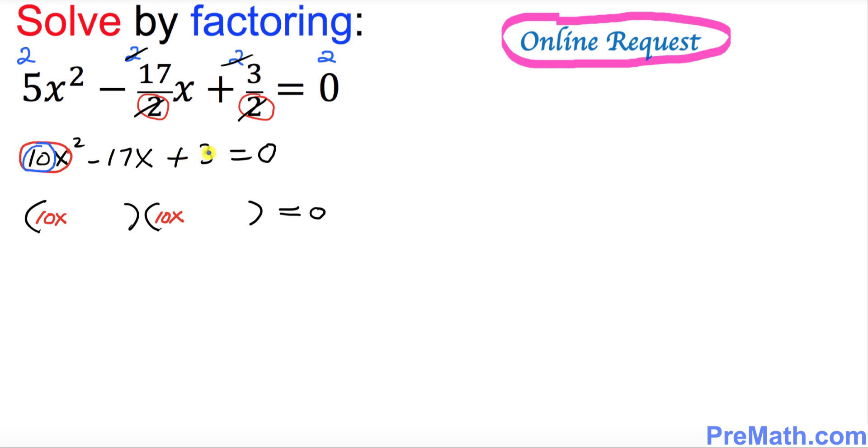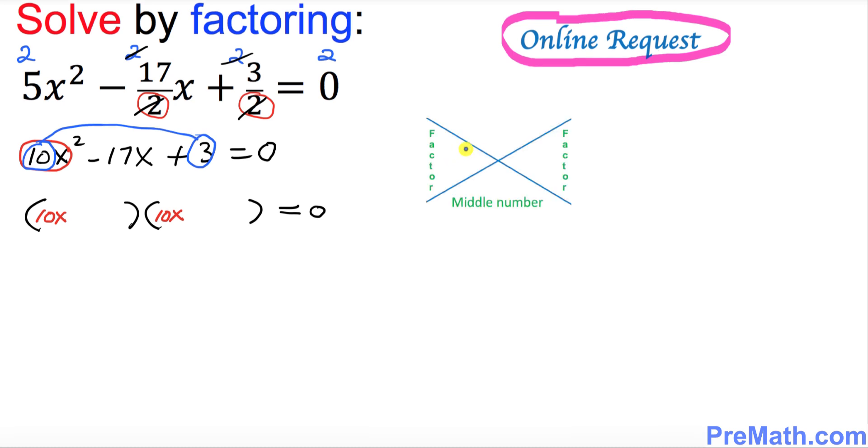Next, look at the left hand side where this number is 10, and on the right hand side this number is positive 3. Multiply these two end numbers: 10 times 3 equals 30. Write that 30 on the top in this diagram. Now look at this middle number which is negative 17 and write it down at the bottom.